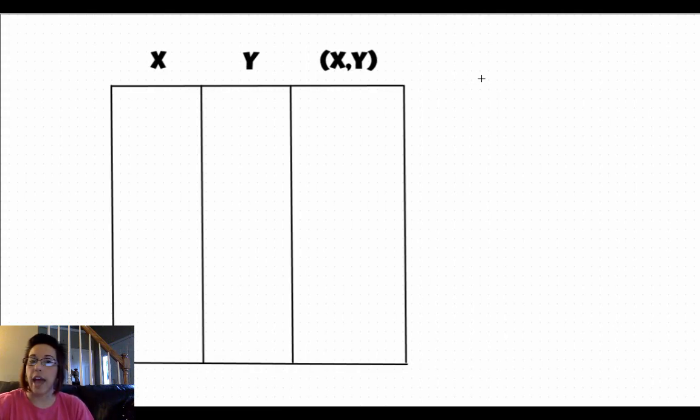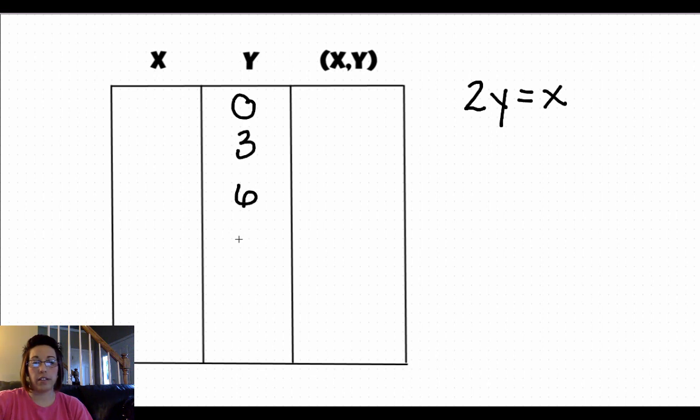Let's go ahead and look at another example here. If we have 2y equals x, remember that when there's no sign between a number and a variable, that always means to multiply. So let's go ahead and plug in some values of y. Let's go 0, 3, 6, 8, 10.